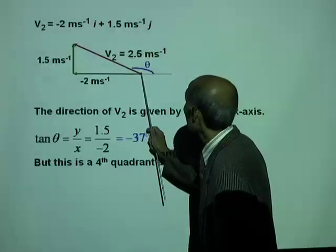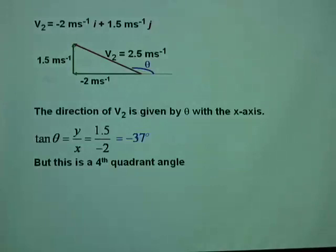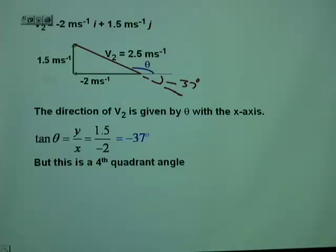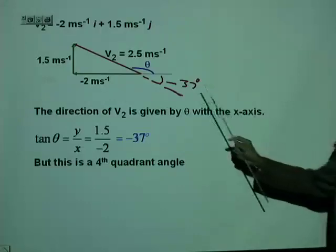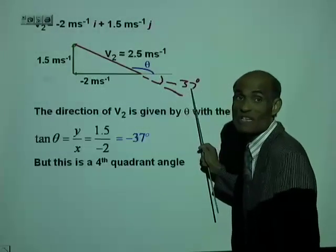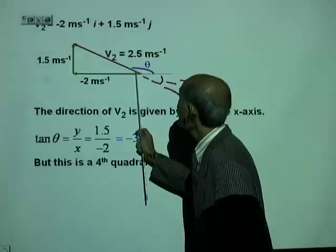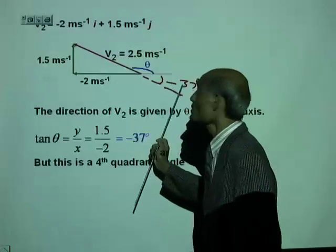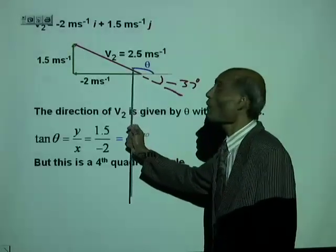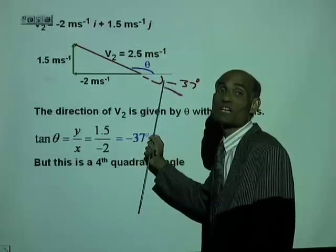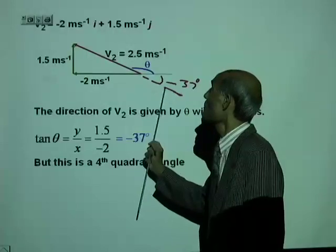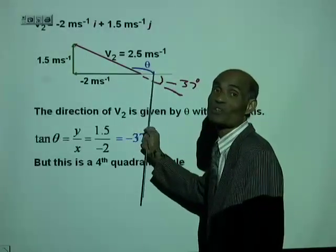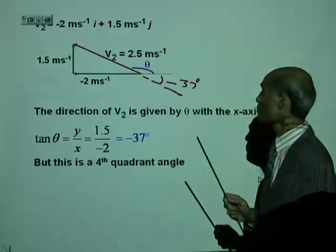The calculator gave you this angle of negative 37 degrees — an angle measured from the x-axis in the clockwise direction is negative. What we actually need is the second-quadrant angle. To get the second-quadrant angle, add 180 to negative 37. So negative 37 plus 180 gives you theta. That is the fourth-quadrant angle the calculator returned.